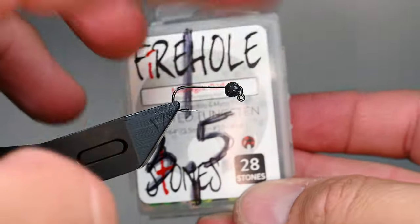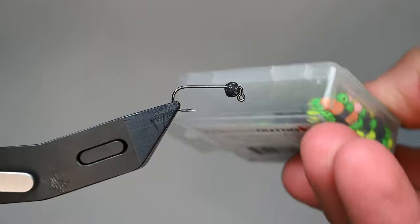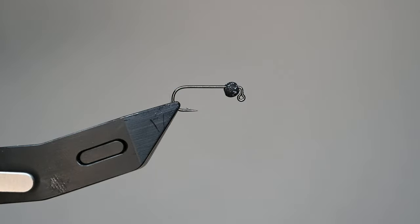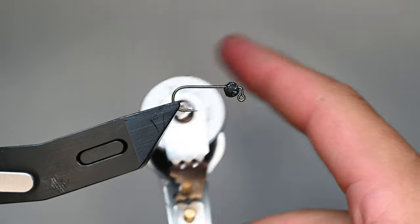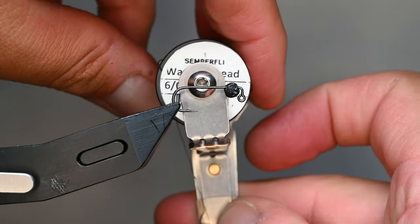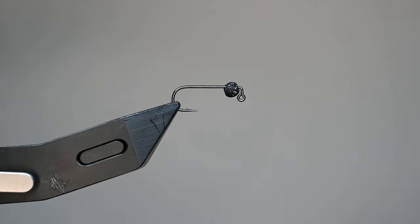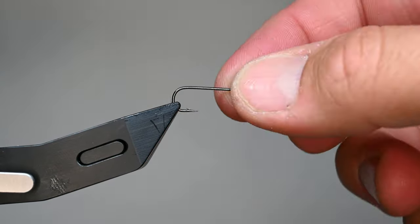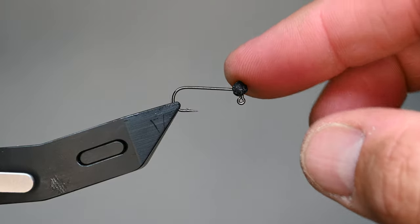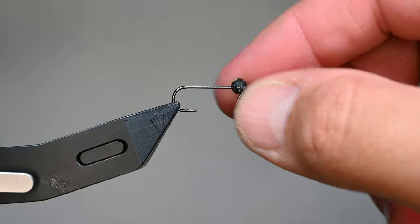We're going to be using a slotted Firehole bead, this is a 3.5 millimeter, and as you can see it comes in a couple different varieties in this black. Then we're going to be using Semperfli thread, this is their classic waxed thread in a 6-0, and we're going to get started. Make sure our hook's in the vise.